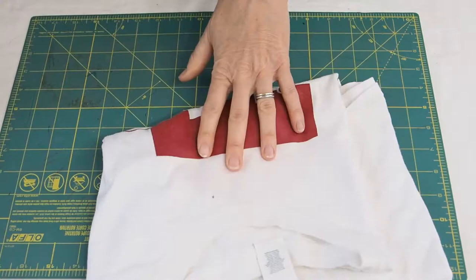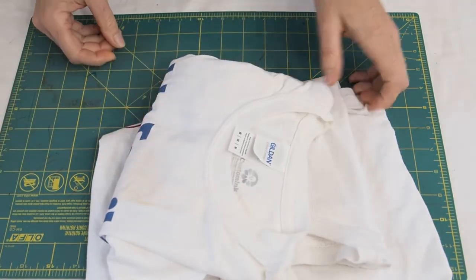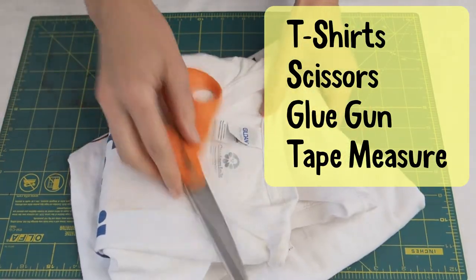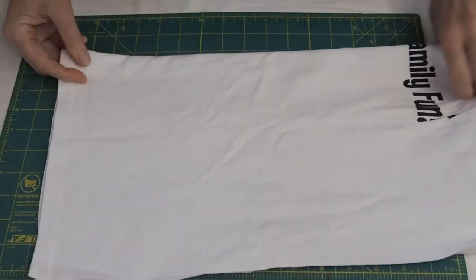Now let's get started. You'll need some old t-shirts, a scissors, a glue gun, and a tape measure to make these headbands today.